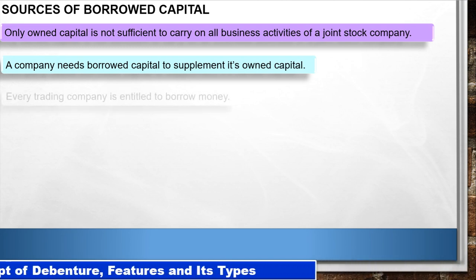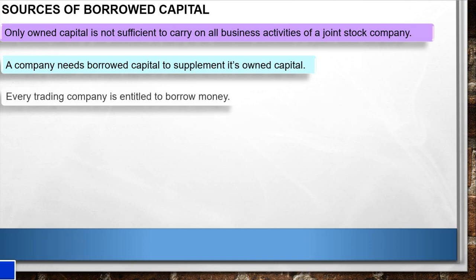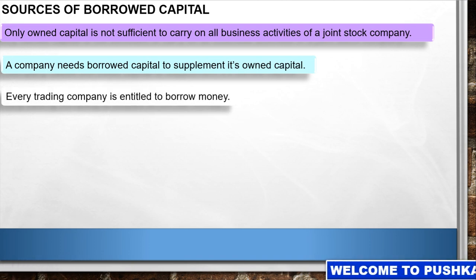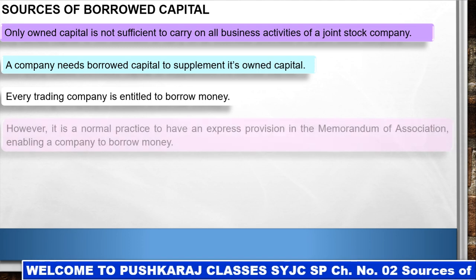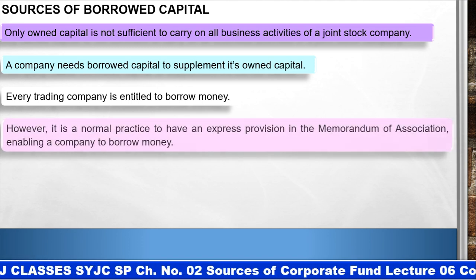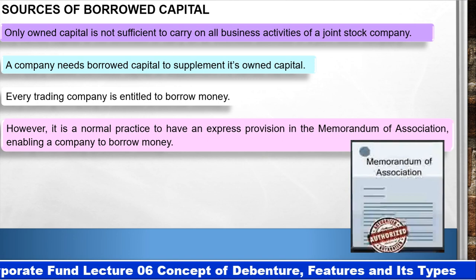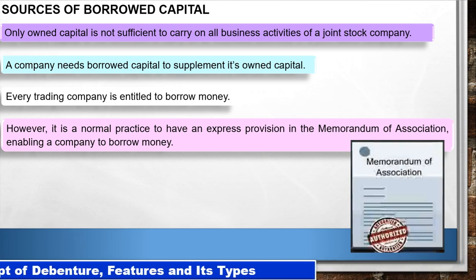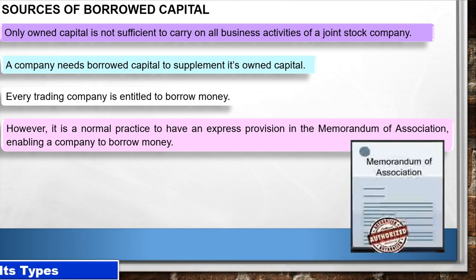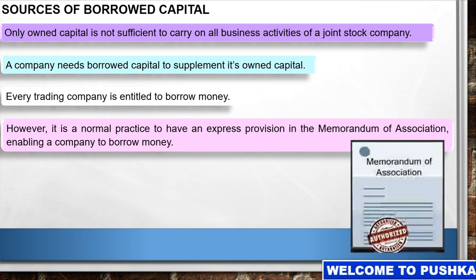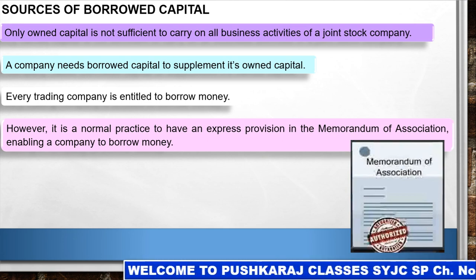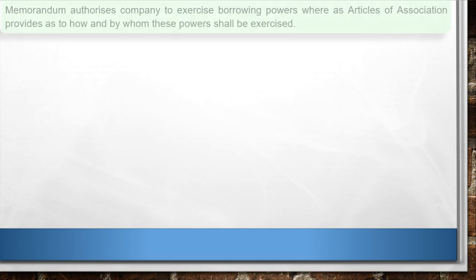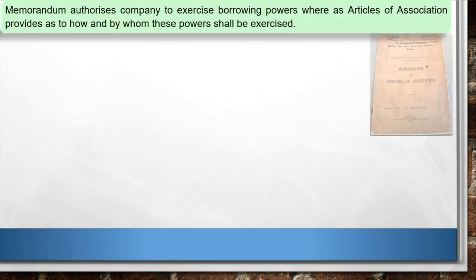Every trading company is entitled to borrow money. However, it is a normal practice to have an express provision in the Memorandum of Association enabling a company to borrow money. Memorandum authorizes the company to exercise borrowing powers, whereas Articles of Association provides as to how and by whom these powers shall be exercised.